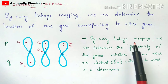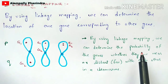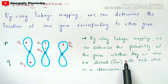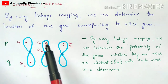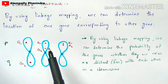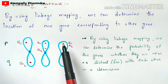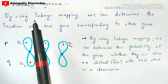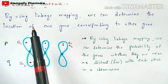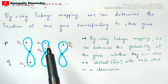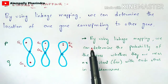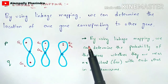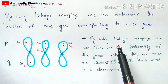By using linkage mapping, we can determine the probability of whether the genes are near or far with each other in a chromosome, but the exact location or exact locus of the gene cannot be determined. Linkage mapping can find whether genes are near or far, but not the precise position. That is why we use linkage mapping in rare cases and highly use physical mapping, because it gives accurate results.